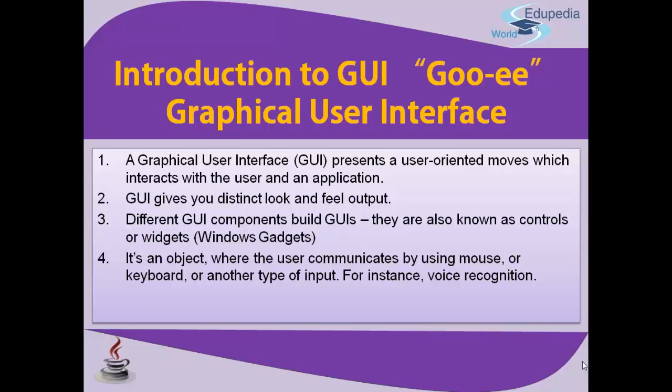Different GUI components are also known as controls or gadgets — window gadgets. All controls such as labels, text boxes, text fields, text areas, buttons, radio buttons, check boxes, and so on. It is an object where the user communicates using a mouse, keyboard, or another type of input, for instance voice recognition.